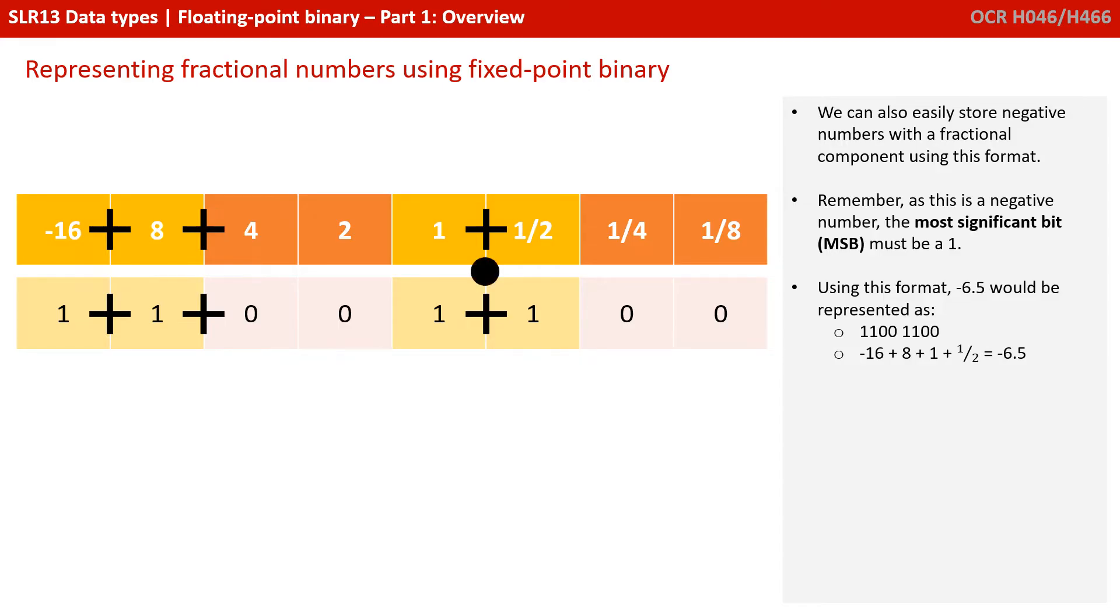We can also easily store negative numbers with a fractional component using this format. Remember, as this is a negative number, the most significant bit, that's the leftmost bit, must be a 1. So using this format, minus 6.5 would be represented as 1100 1100. That's minus 16, plus an 8, bringing us up to minus 8, plus a 1, bringing us up to minus 7, plus a half, bringing us up to minus 6.5.